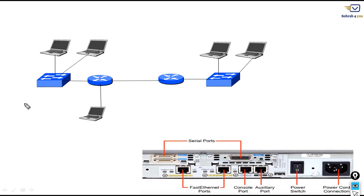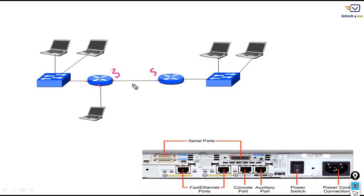To summarize the ports: if you want to connect different routers together, you mostly use serial cables and serial ports. For connecting PCs, printers, and switches, you use the Fast Ethernet LAN ports. These are the symbols of the routers which we can connect in a network diagram.